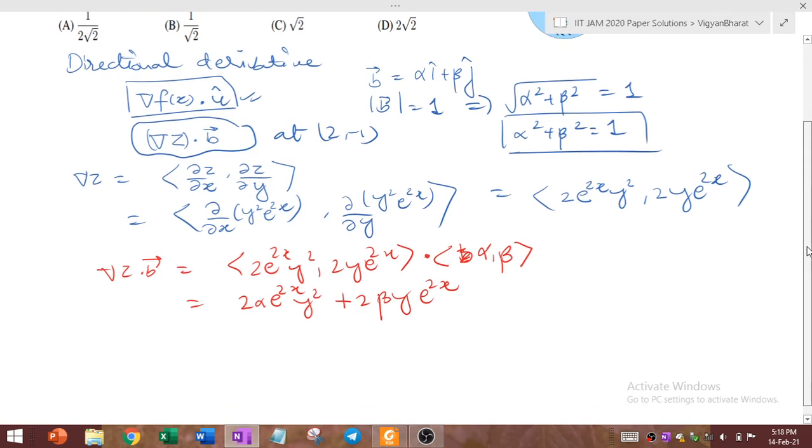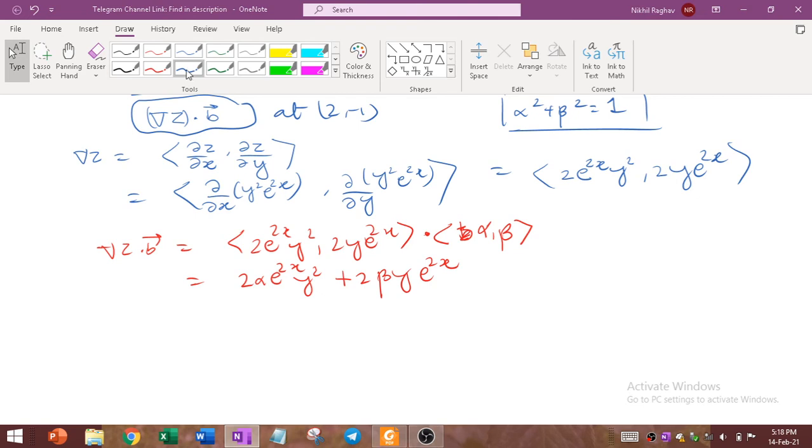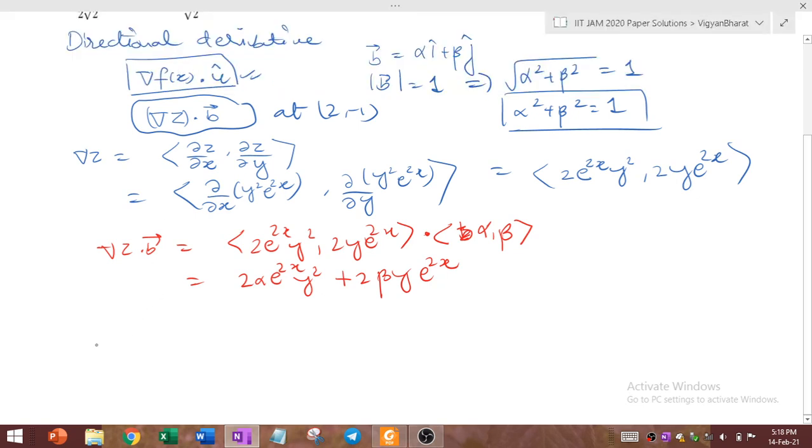At the point 2 comma minus 1 this quantity becomes simply replace x by 2 and y by minus 1 everywhere. So it will be 2 alpha e to the power 4 minus 1 square is same as 1 plus 2 beta y is minus 1 e to the power 4.